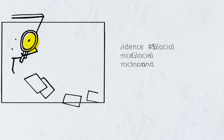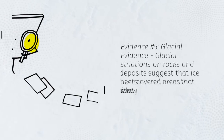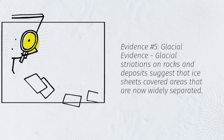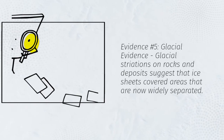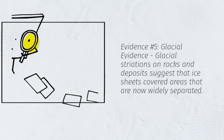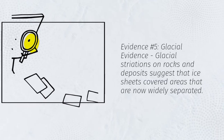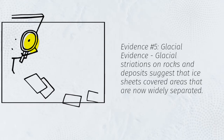Evidence number five: Glacial evidence. Glacial striations on rocks and deposits suggest that ice sheets covered areas that are now widely separated.